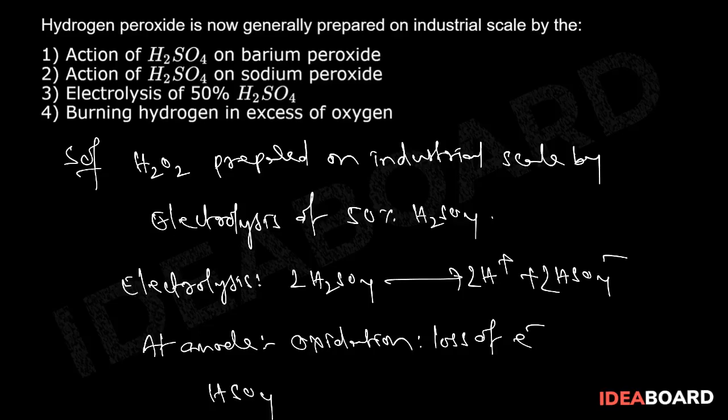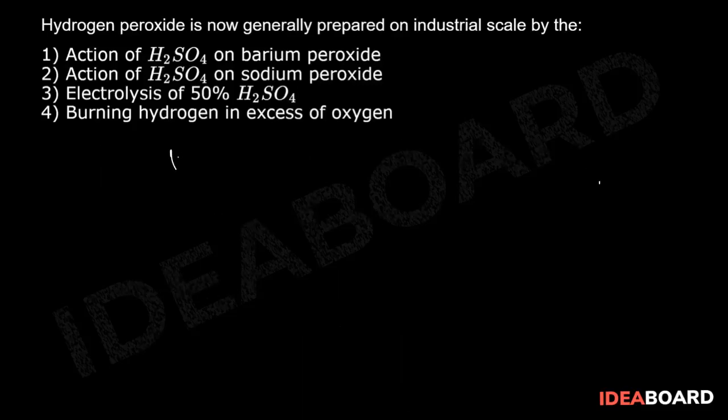HSO4-, the anion, moves to the anode and gives H2S2O8 plus two electrons. H2S2O8 reacts with water to form H2SO5.